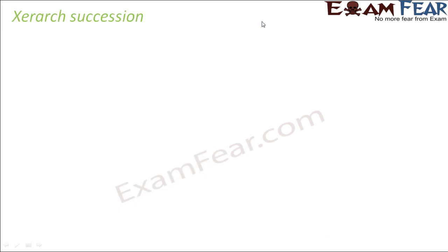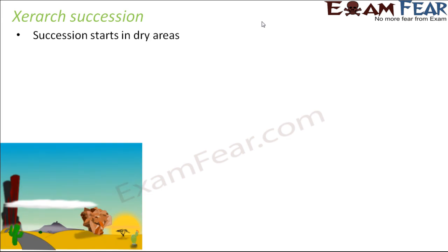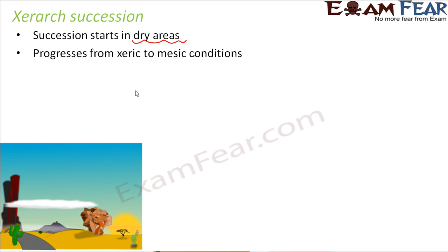Let us start with xerarch succession. Xerarch is derived from the word xeric, which means dry. So this type of succession starts in dry areas — for example, deserts, where it is extremely dry and there is no water at all. Over a period of time, it progresses from xeric conditions to mesic conditions.